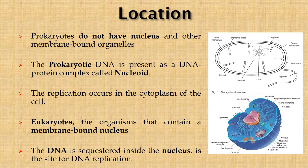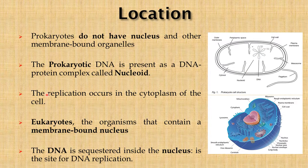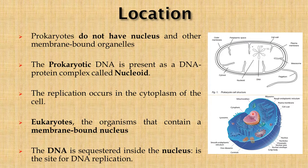Now let us see where replication takes place — that is, the location. Prokaryotes don't have a nucleus and other membrane-bound organelles. In prokaryotes the DNA is present as a DNA-protein complex called nucleoids, and replication occurs in the cytosol of the cell. Whereas in eukaryotes, organisms that contain a membrane-bound nucleus, the DNA is sequestered inside the nucleus, which is the site for DNA replication.